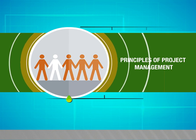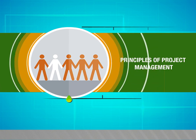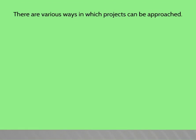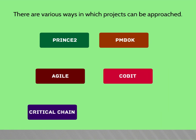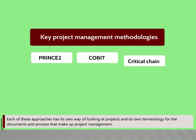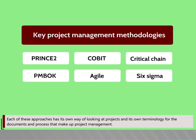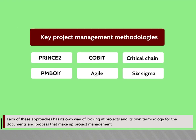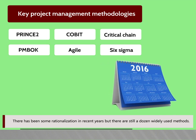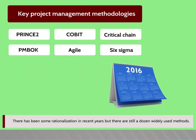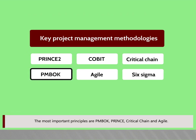In this video we are going to see about principles of project management. There are various ways in which projects can be approached, including PRINCE2, PMBOK, Agile, Critical Chain, and Six Sigma. Each approach has its own way of looking at projects and its own terminology. There has been some rationalization in recent years, but there are still a dozen widely used methods. The most important principles are PMBOK, PRINCE2, Critical Chain, and Agile.